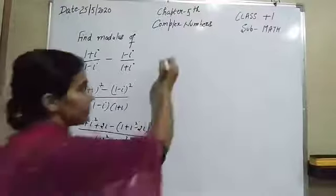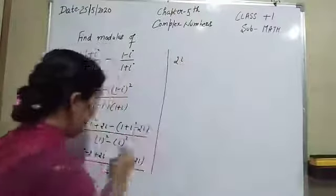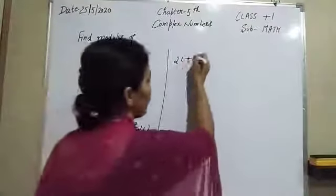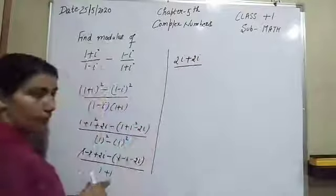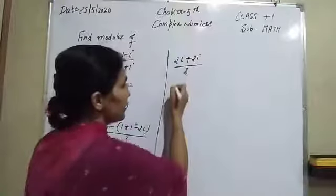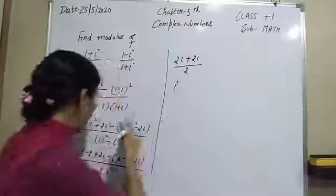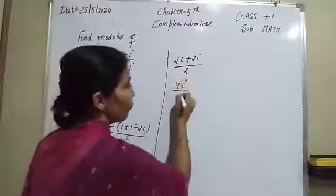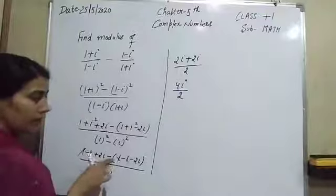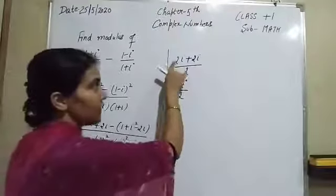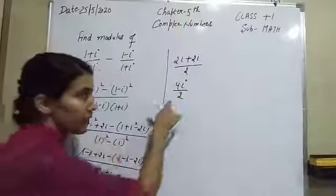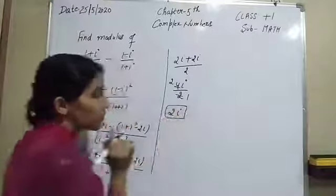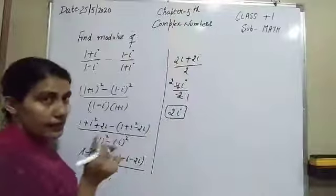The real parts cancel, leaving 2 eta in the first bracket; and the minus sign with minus 2 eta gives plus 2 eta. So the numerator is 2 eta plus 2 eta, that is 4 eta, over denominator 2. Dividing: 4 eta over 2 is 2 eta.